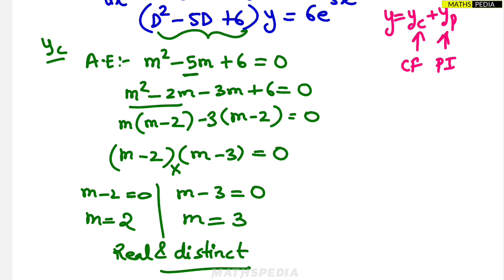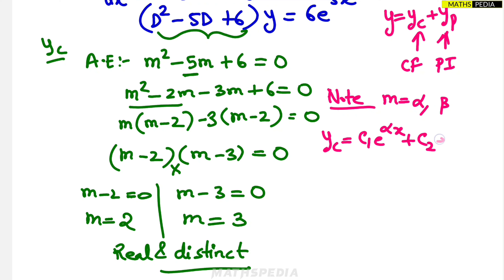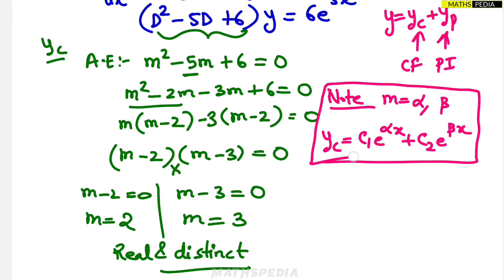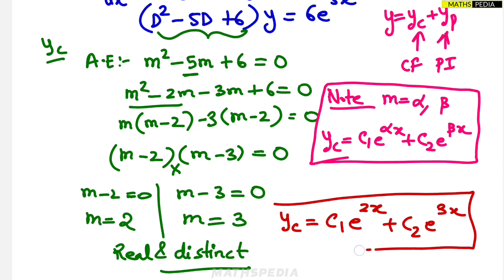These two roots are real and distinct — separate real numbers, not equal. For real and distinct roots α and β, the complementary function is yc = c₁·e^(αx) + c₂·e^(βx). So here, yc = c₁·e^(2x) + c₂·e^(3x).